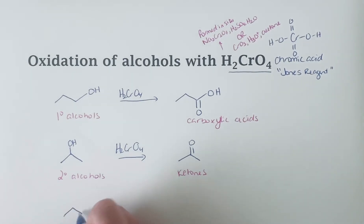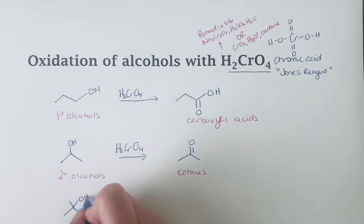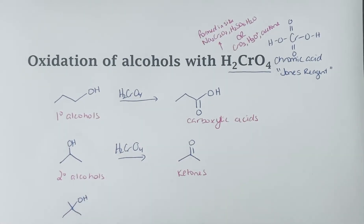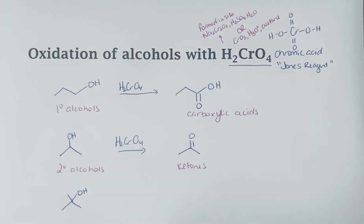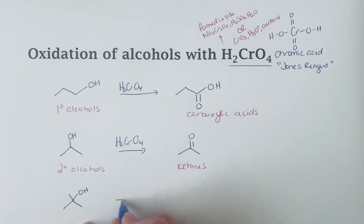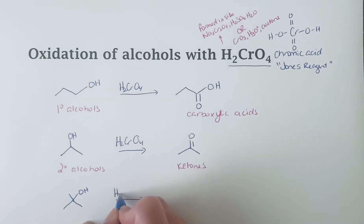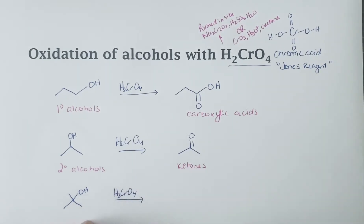And tertiary alcohols already have three bonds to carbon. If we were to try and put a double bond here, we would be exceeding the octet. So if you have a tertiary alcohol in a structure and you treat it with chromic acid, you will not get a reaction. So no reaction.